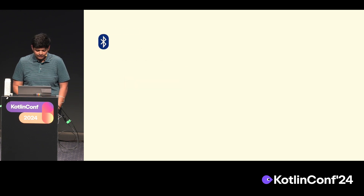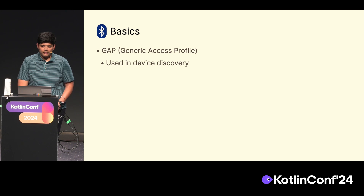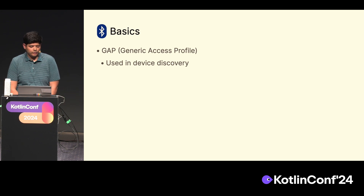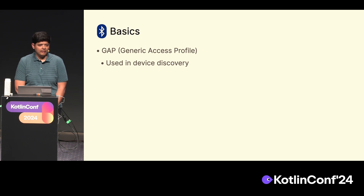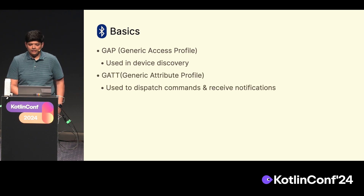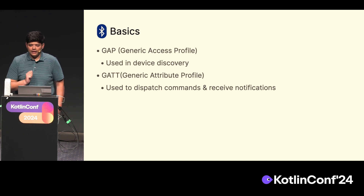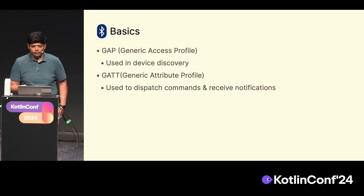The key things with Bluetooth Low Energy: there are two primary components. The first is called Generic Access Profile — this is the one used for device discovery, how devices discover each other to connect. The second is called GATT, the Generic Attribute Profile. This is how you send commands and read and write data to the actual connected peripheral device, and how you can also receive notifications from that device. We'll look at each in more detail.